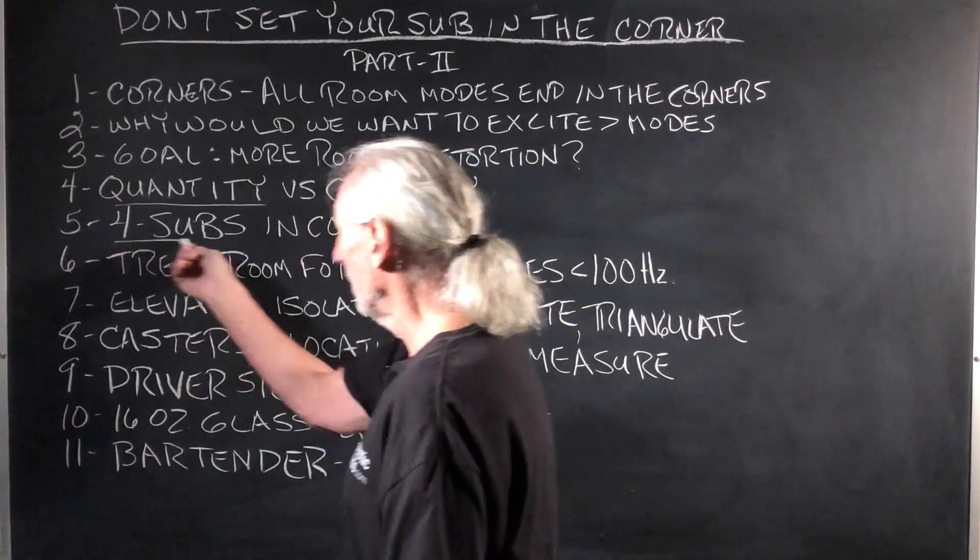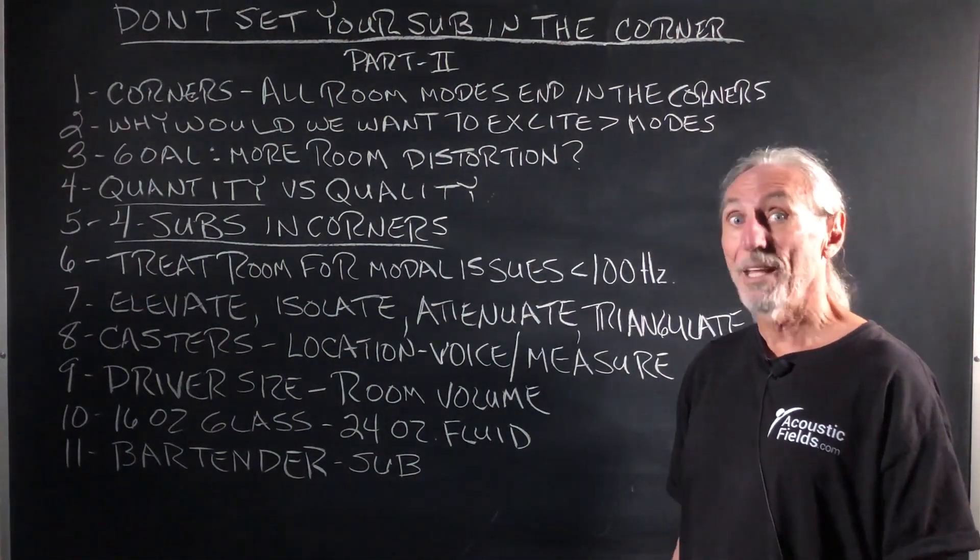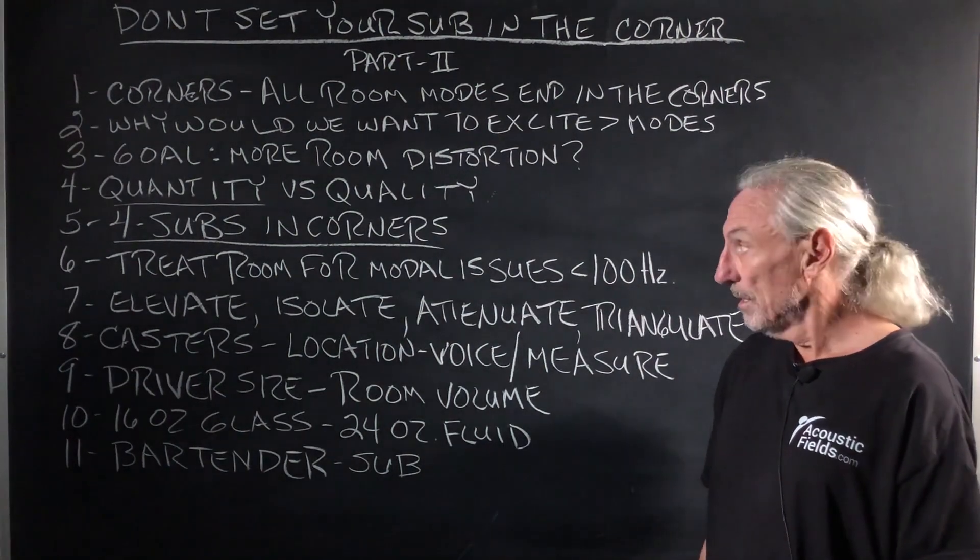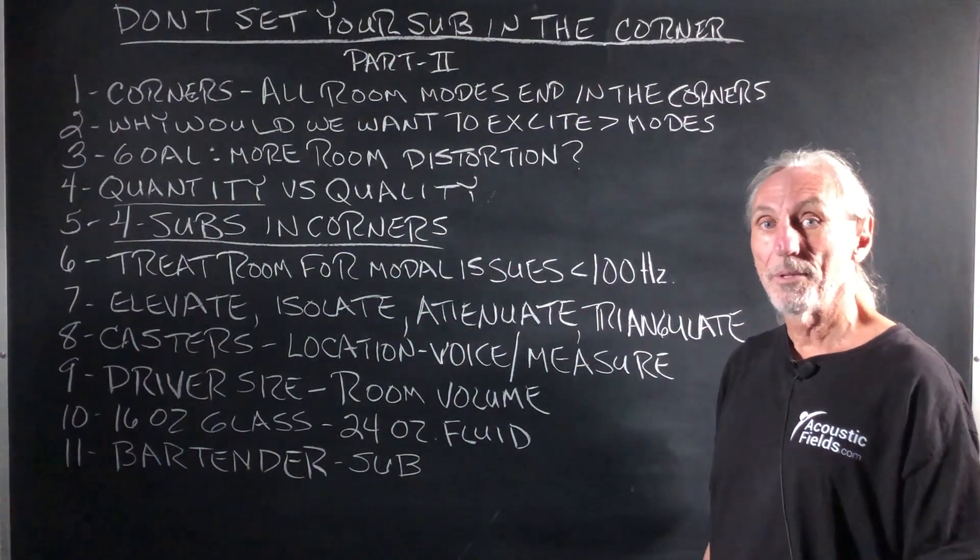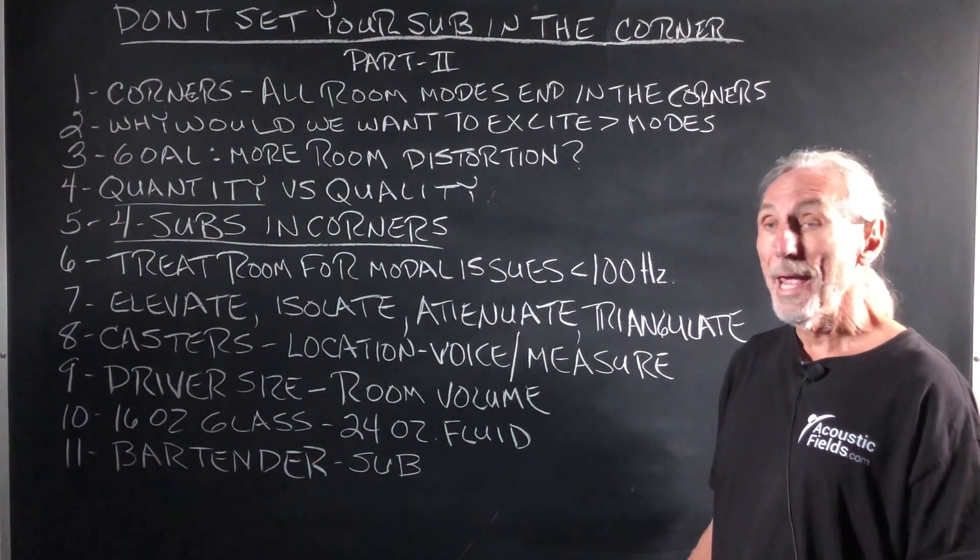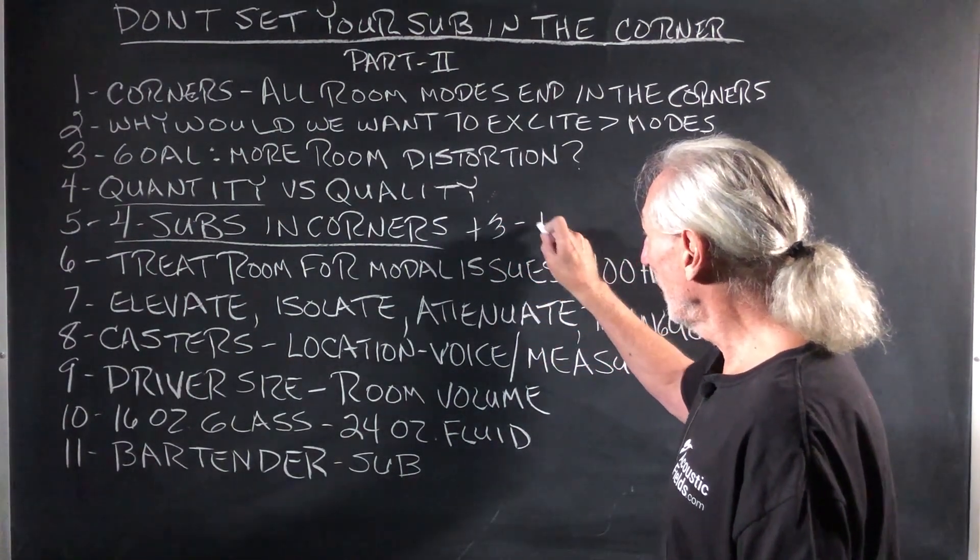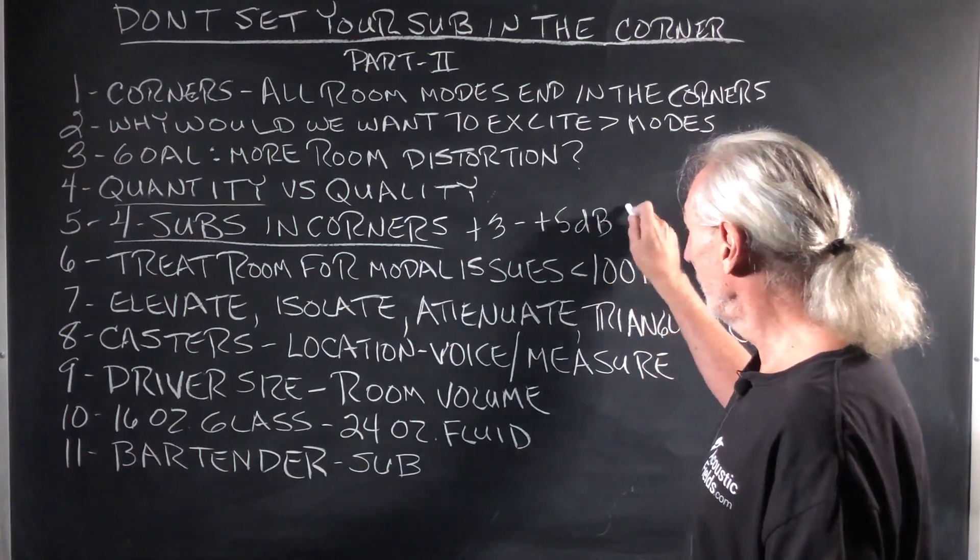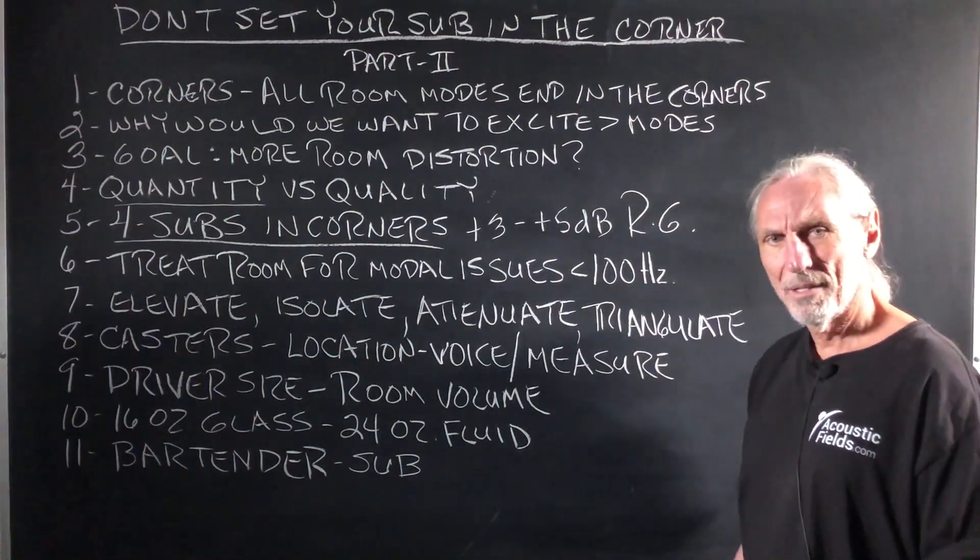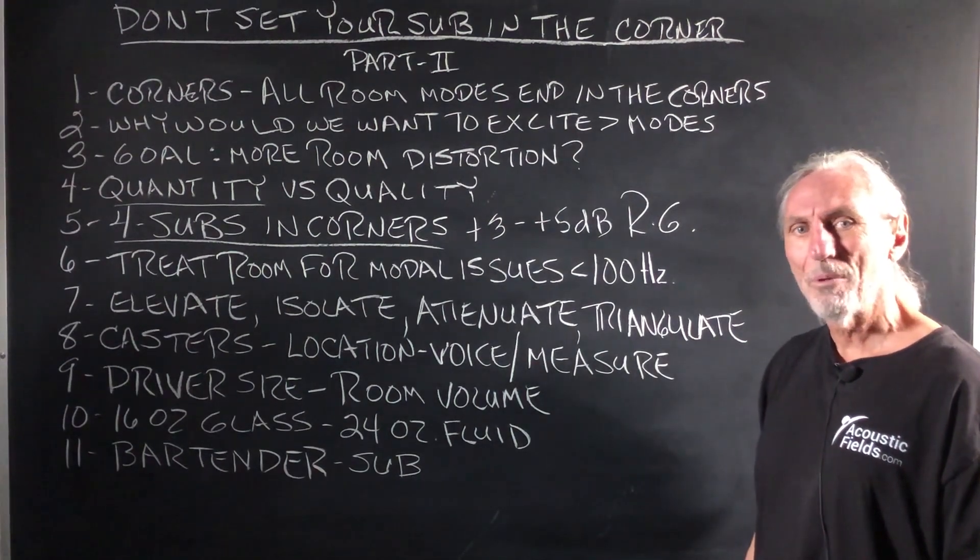Here's a classic example. Four subs in the corners. Oh, great. Let's spend $10,000 at $2,500 a sub, average price today, to excite all the modes that are in the corners of the room and produce more distortion. And plus 3 to plus 5 dB of room gain. I thought our goal was to have less room gain, not more.